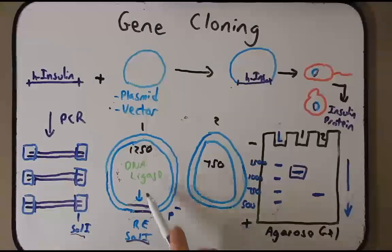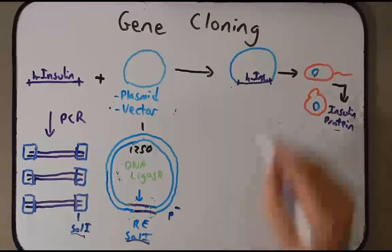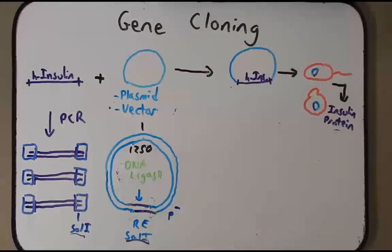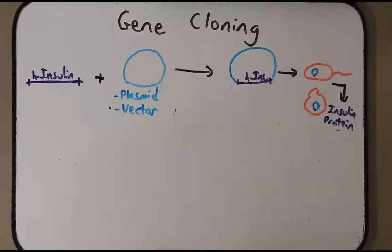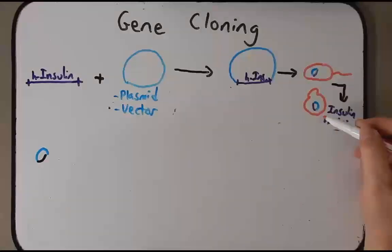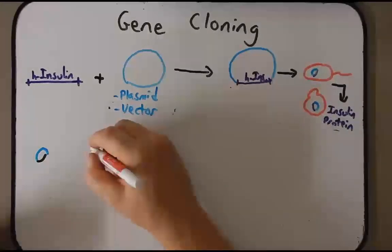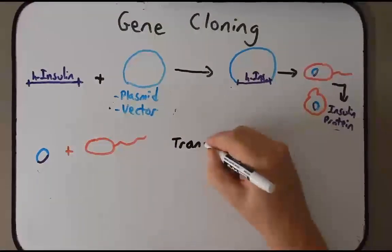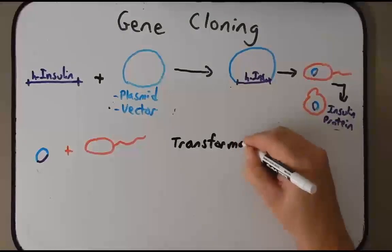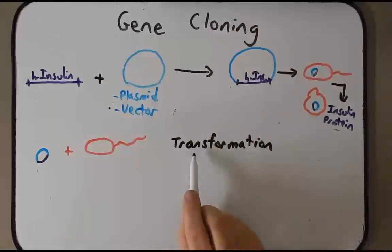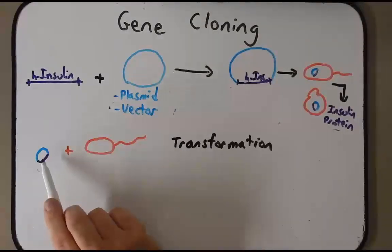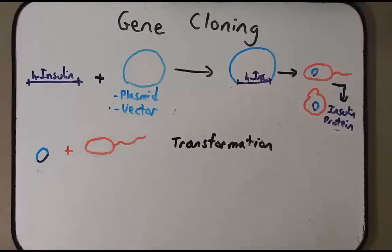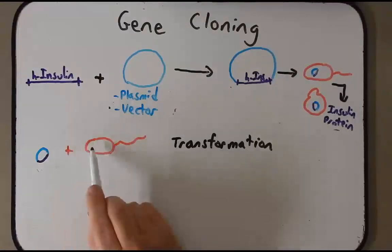Now that we're confident we have the correct plasmid, we can place it inside a bacterial cell. We take this verified plasmid with the insulin gene and place it inside a host — it could be E. coli or a yeast cell; let's use a bacterial cell. To get this plasmid inside E. coli we use the process of transformation, very similar to the transformation we discussed with horizontal gene transfer in bacteria, where a bacterial cell imports a random piece of DNA from the environment. This plasmid isn't going to automatically go inside, but there are a few things we can do to make it more efficient.